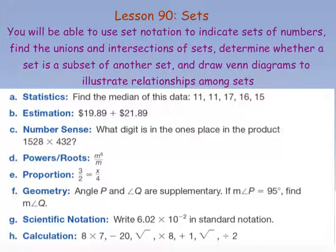Course 3, Lesson 90. We're looking at sets and being able to indicate our different sets, find unions and intersections, subsets, and show Venn diagrams that help us illustrate relationships among sets.